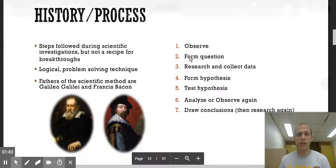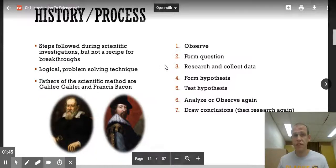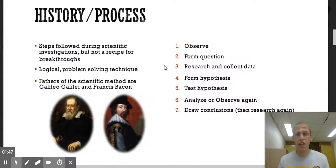So the scientific method, I have seven steps right here. That's not necessarily broken into seven. These are just the seven that I wrote out for us. The first step being observing something, then forming a question, research and collect data, form your hypothesis, test your hypothesis, analyze or observe again, and then draw some conclusion and publish your results.